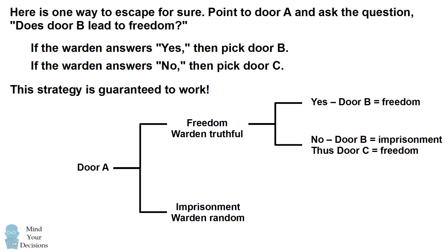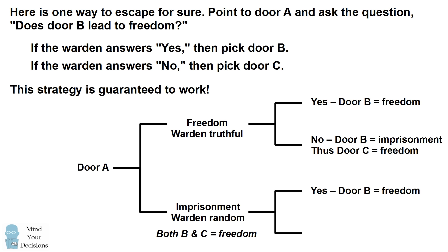But what about the case where door A leads to imprisonment, and the warden answers randomly? Well in this case, if door A leads to imprisonment, that means the other two doors, B and C, lead to freedom. So you can always pick doors B and C in these cases, no matter what the warden answers. If you pick door B when the warden answers yes, that will lead to freedom. And if you pick door C when the warden answers no, that once again will lead to freedom.